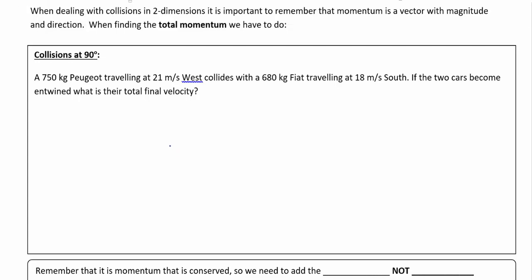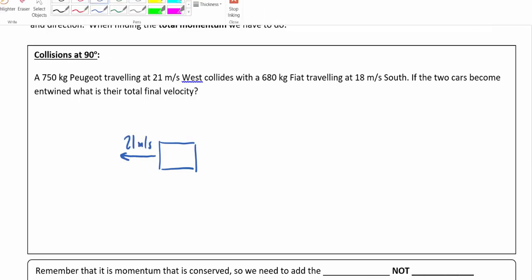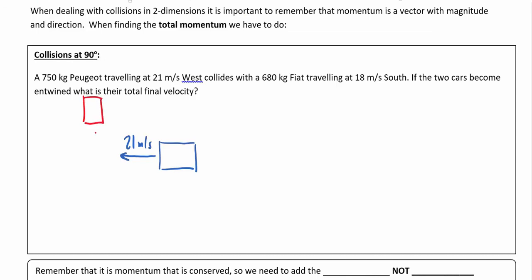So I'm just going to map this out. I've got the Peugeot traveling west at 21 meters per second, and that's going to collide with the Fiat, which is traveling at 18 meters per second to the south. You can imagine when these two cars collide and become entwined, the Fiat has momentum south, the Peugeot has momentum to the west, so they're going to go off at an angle.